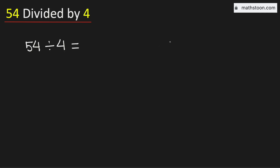In this video, let us learn how to divide the number 54 by 4 using the long division method. Consider the first digit 5. We know that 4 times 1 is 4. Subtract, we get 1. Now see that 1 is less than 4, that is why we will bring down this number 4 here.